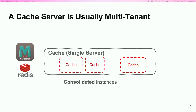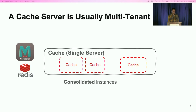In production, a cache server is usually multi-tenant. Several cache instances may be co-located on one cache server for better systematization, user management, and better scaling.